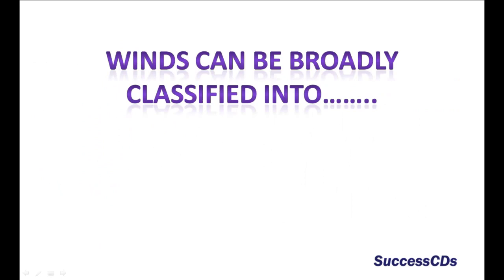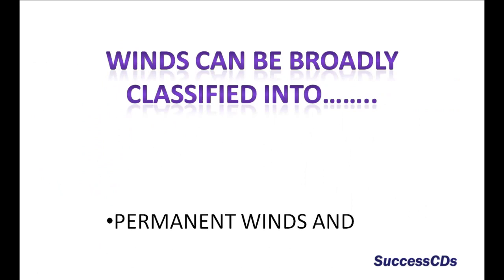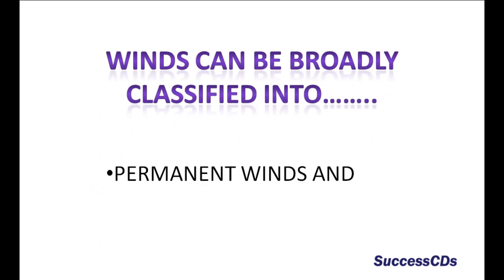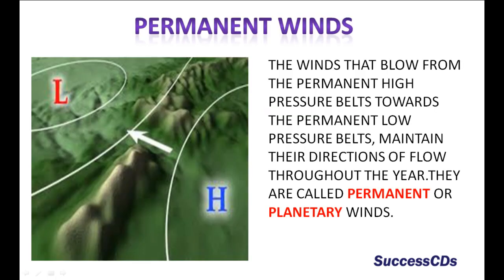Winds can be broadly classified into permanent winds and local winds. The winds that blow from the permanent high pressure belts towards the permanent low pressure belts and maintain their direction of flow throughout the year are called permanent or planetary winds.